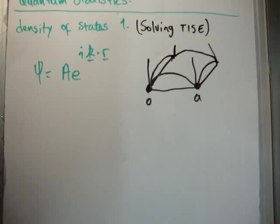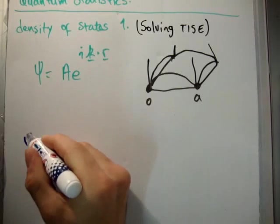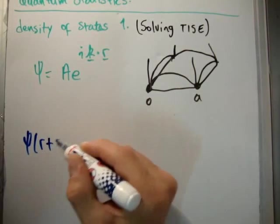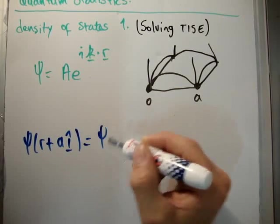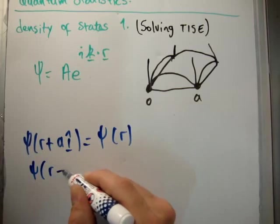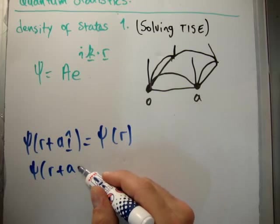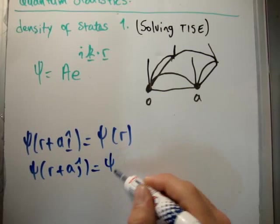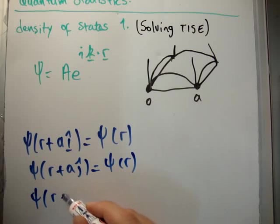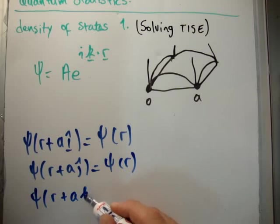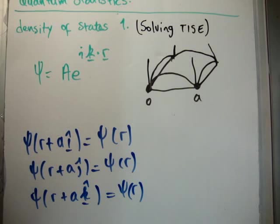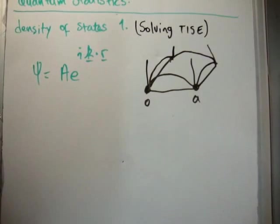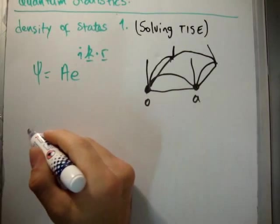So that means the following. It means that psi of r plus a in the a i hat is equal to psi of r. Psi of r plus a j hat is equal to psi of r. And psi of r plus a k hat is equal to psi of r. In other words, what I'm trying to say here is that if you just move to the boundary, you're back to where you started. So how does that give us more information?